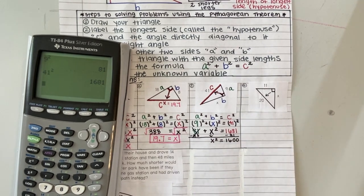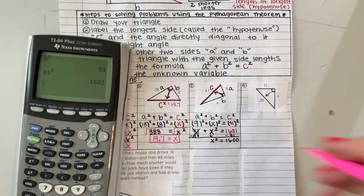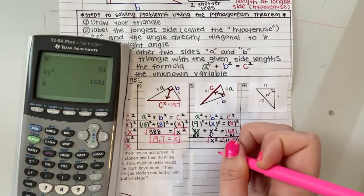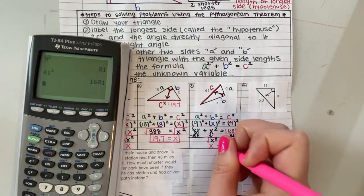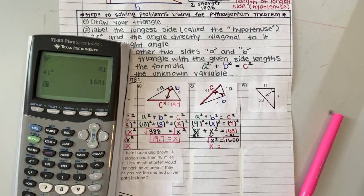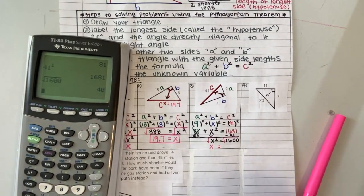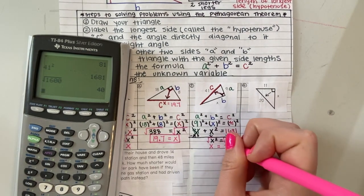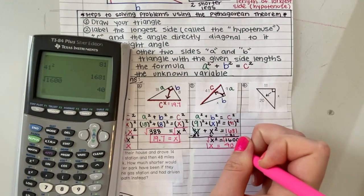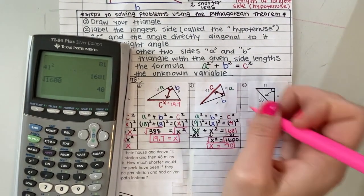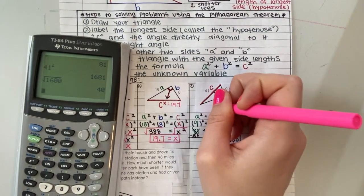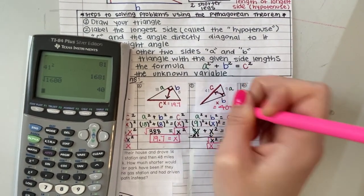Once that happens, I can take the square root. The square root of X squared is just X, and then the square root of 1600 is 40. So then I know that this last side length, or B, this letter X, is 40. We're going to do one more example that looks like that.